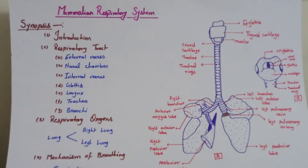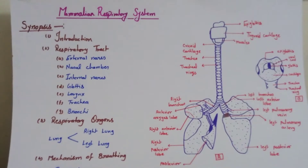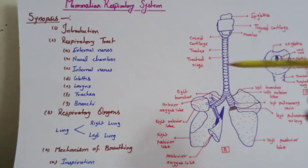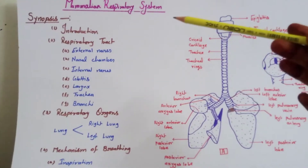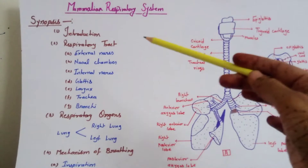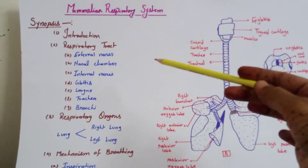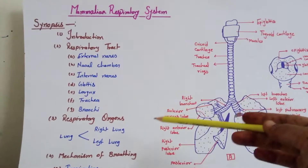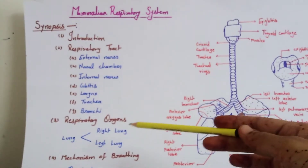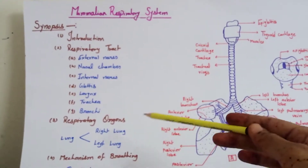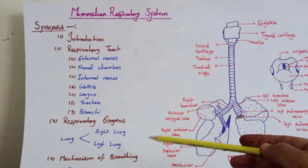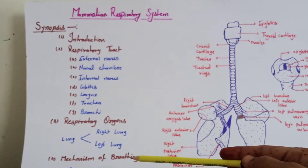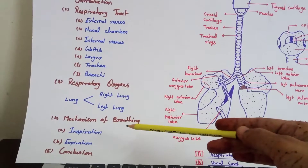Hello everyone, this is Shraddha and I will explain the respiratory system of rabbit, which is a member of Mammalia. In this respiratory system we have to cover: introduction, respiratory tract — which includes external nares, nasal chamber, internal nares, glottis, larynx, trachea, and bronchi — then the respiratory organ that is the lungs, with right and left lung.